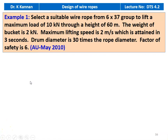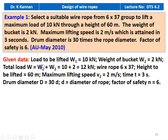Now we take one example from the May 2010 question paper. Example number 1: Select a suitable wire rope from the 6 by 37 group to lift a maximum load of 10 kN to a height of 60 meters. The weight of the bucket is 2 kN. Maximum lifting speed is 2 m/s attained in 3 seconds. The drum diameter is 30 times the rope diameter and the factor of safety is 6. The data are: load to be lifted W1 = 10 kN, weight of the bucket W2 = 2 kN, total load = W1 + W2 = 12 kN. Wire rope is 6 by 37 construction.